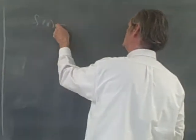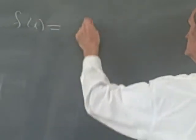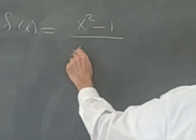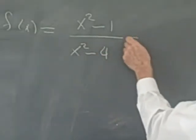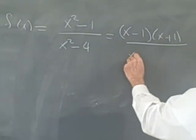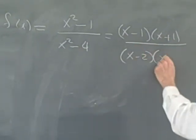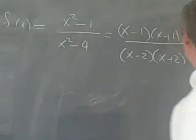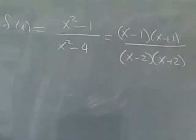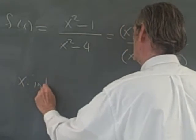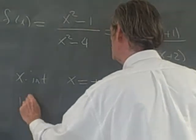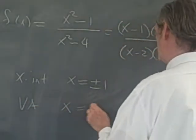So if we start out with f of x equals x squared minus 1 over x squared minus 4, this factors as x minus 1 times x plus 1 over x minus 2 times x plus 2. So we have intercepts, x-intercepts at plus or minus 1, and we have vertical asymptotes at plus or minus 2.